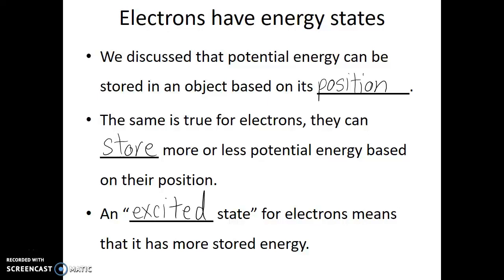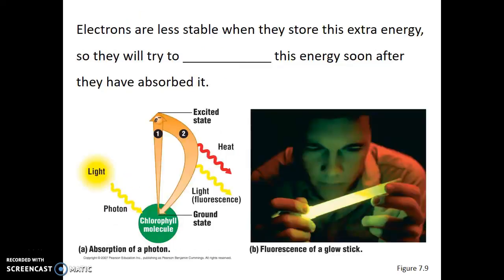An excited state means that the electron has more stored energy. The electron still has its negative charge and is still made of the same materials — it's just in a position in which it has higher energy. Electrons are less stable when they store this extra energy, so they will try to release that energy soon after they have absorbed it. Often this comes in the form of fluorescence, which is a release of light and heat.